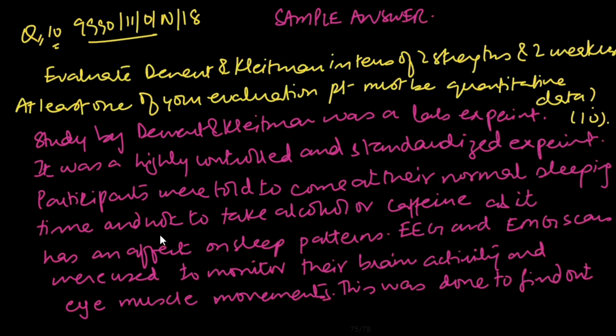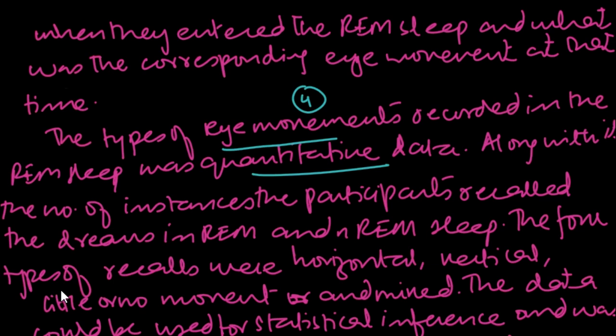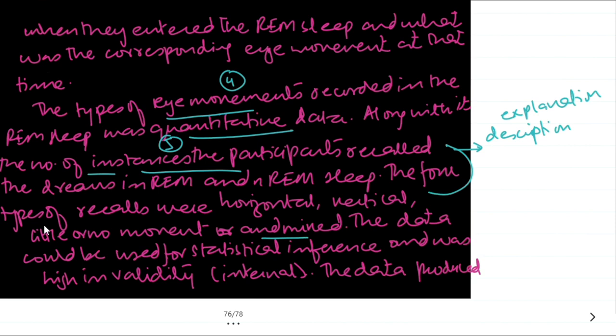Now, looking at all the points. If it's a 10-mark question, at least 10 points should be explained. The first point: lab experiment. Second, controlled and standardized. Third is no alcohol or caffeine. Sleep, three points are there. Fourth, number of recalls, eye movements recorded. That was a quantitative data. Number of instances was five.